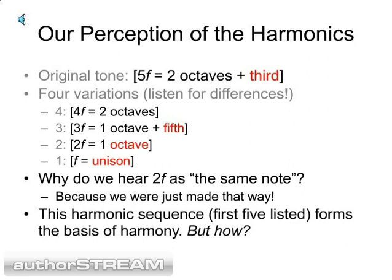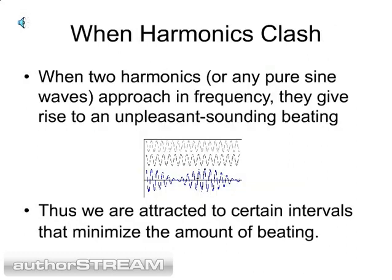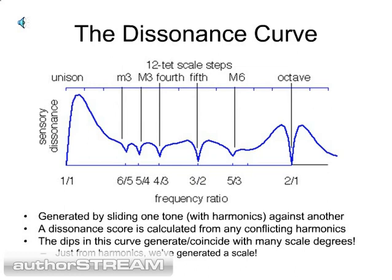In this harmonic sequence, in just the first five harmonics, we've heard the unison, the third, the fifth, and the octave — all very important intervals in harmony. So you may correctly suspect that this harmonic sequence forms the basis of harmony. Whenever two sine waves, such as harmonics, approach in frequency, they give rise to unpleasant-sounding beating, and so we are attracted to whatever intervals minimize this beating. In a computer, we can slide two tones against each other and calculate how badly their harmonics conflict. Graphing this out, the dips in the curve — which identify the least dissonant intervals — coincide with many of our scale degrees: the major third, the perfect fourth, the perfect fifth, the major sixth, and the octave. So just from harmonics, we've been able to identify a scale.